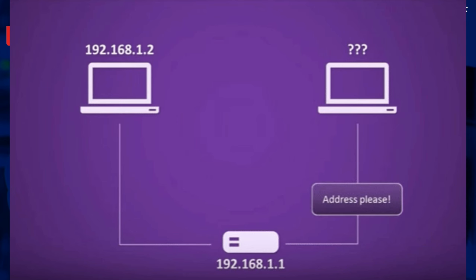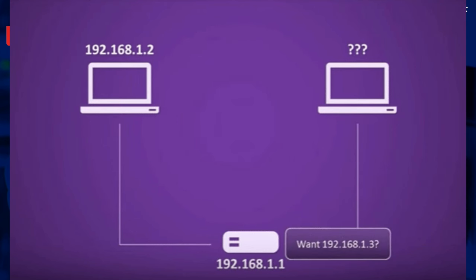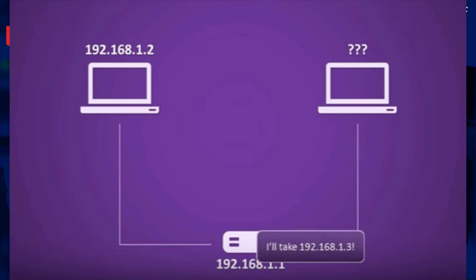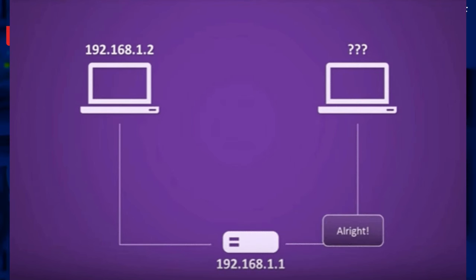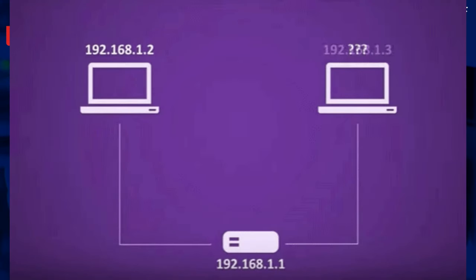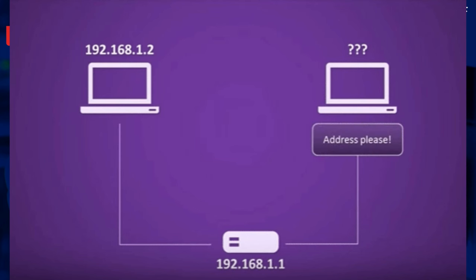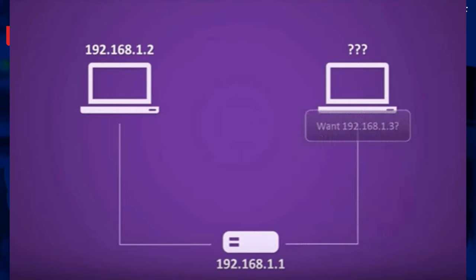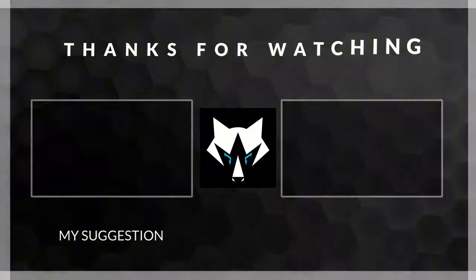To summarize: DHCP relies on UDP port 67 for receiving requests from clients and UDP port 68 for delivering responses back to clients. This communication system allows efficient IP management, dynamically assigning addresses and configurations to devices, ensuring smooth network operations.